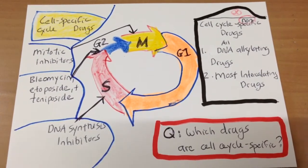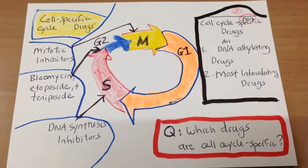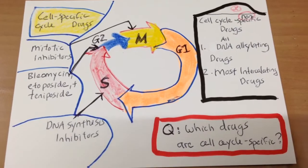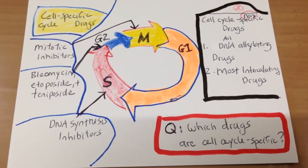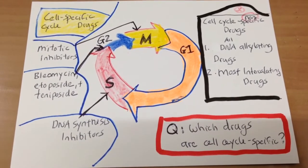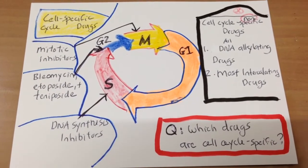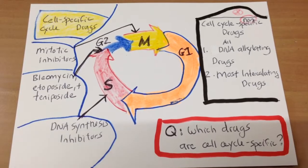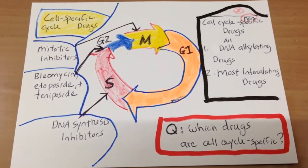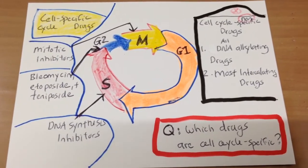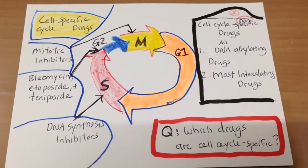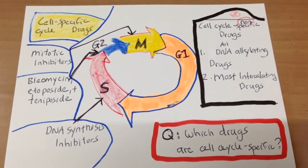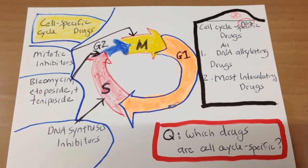Just in case you were up late last night wondering which cancer drugs are cell cycle specific, we are here today to think about it. We can see the cell cycle — we can see the M stage, which is mitosis.